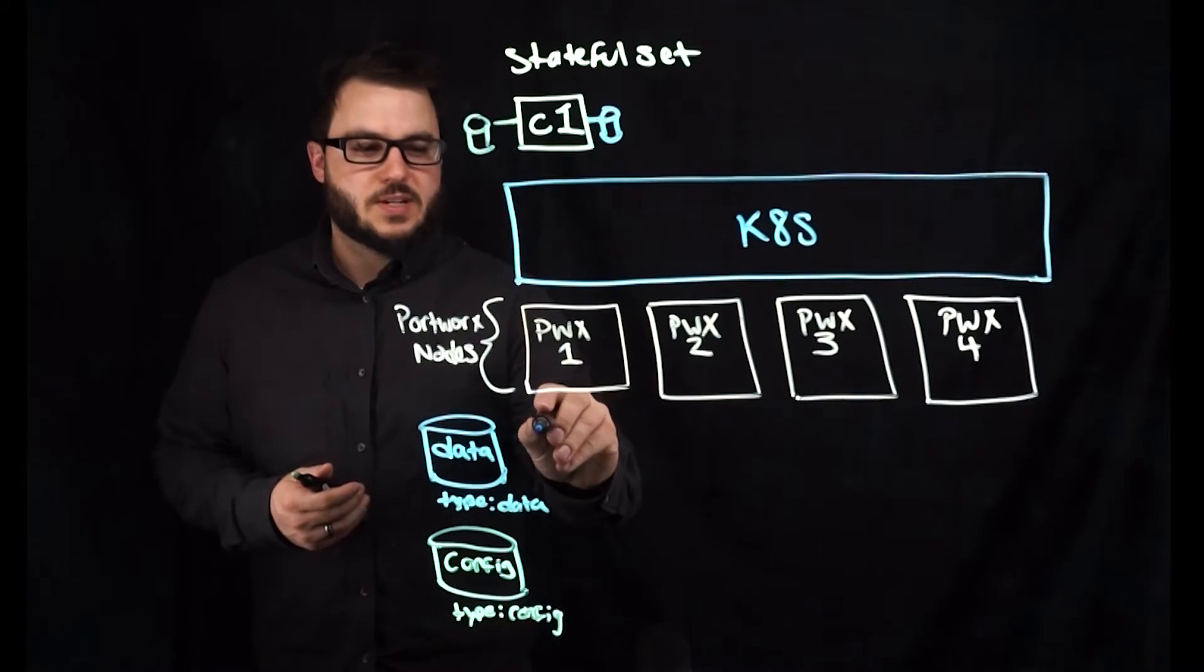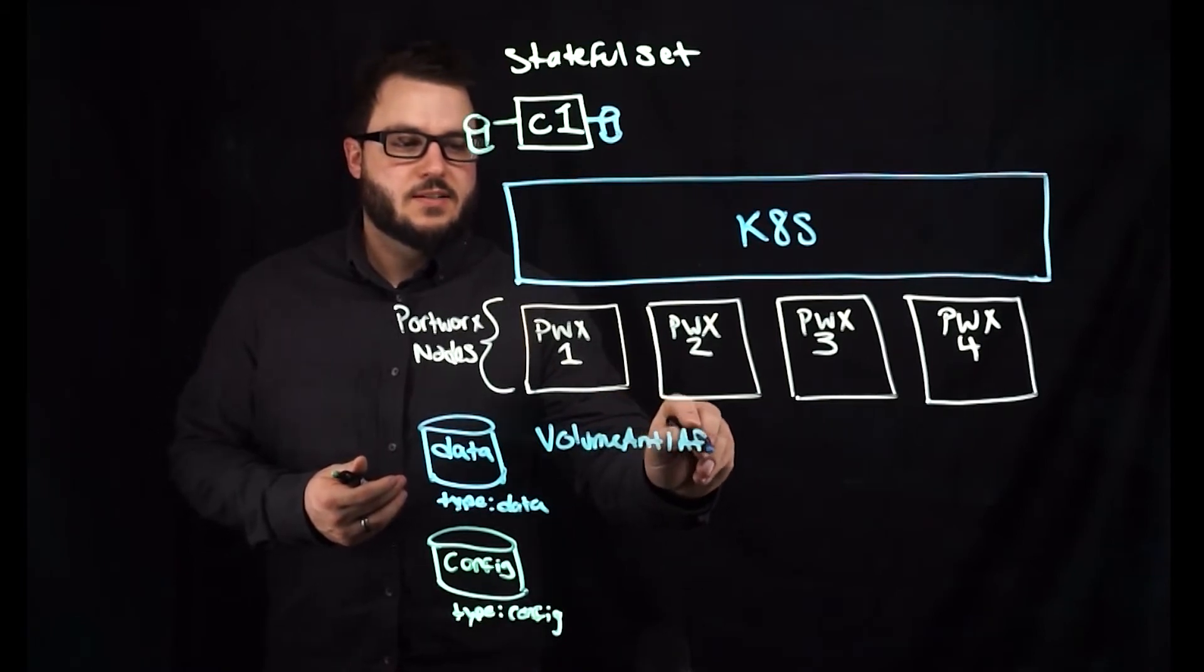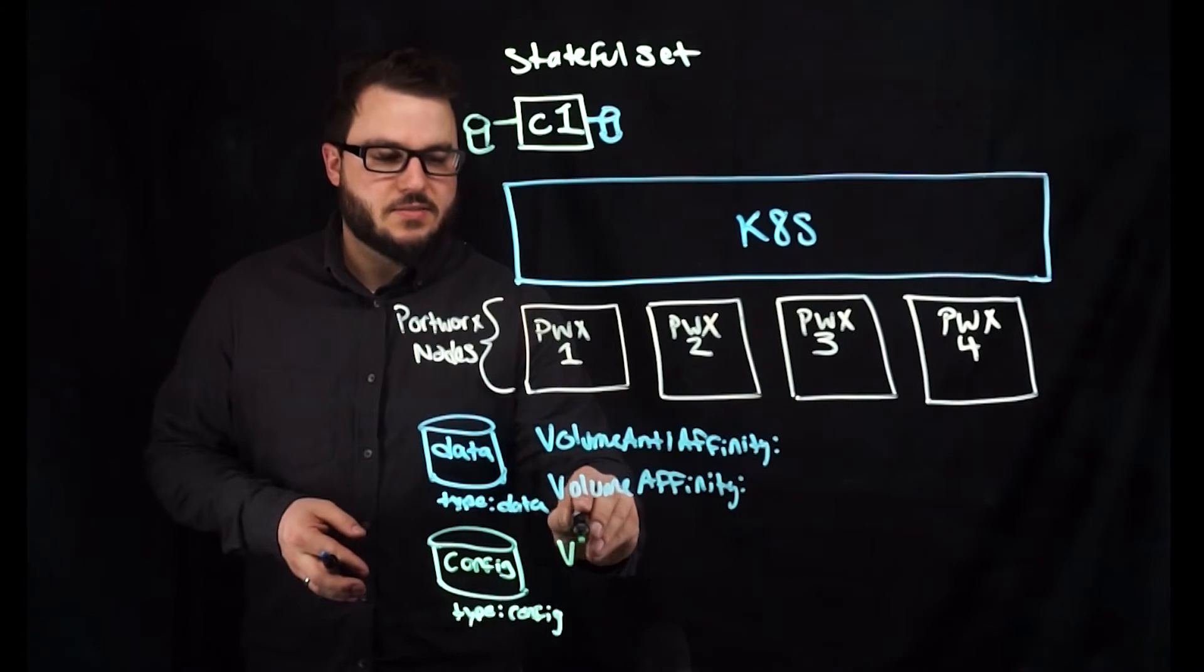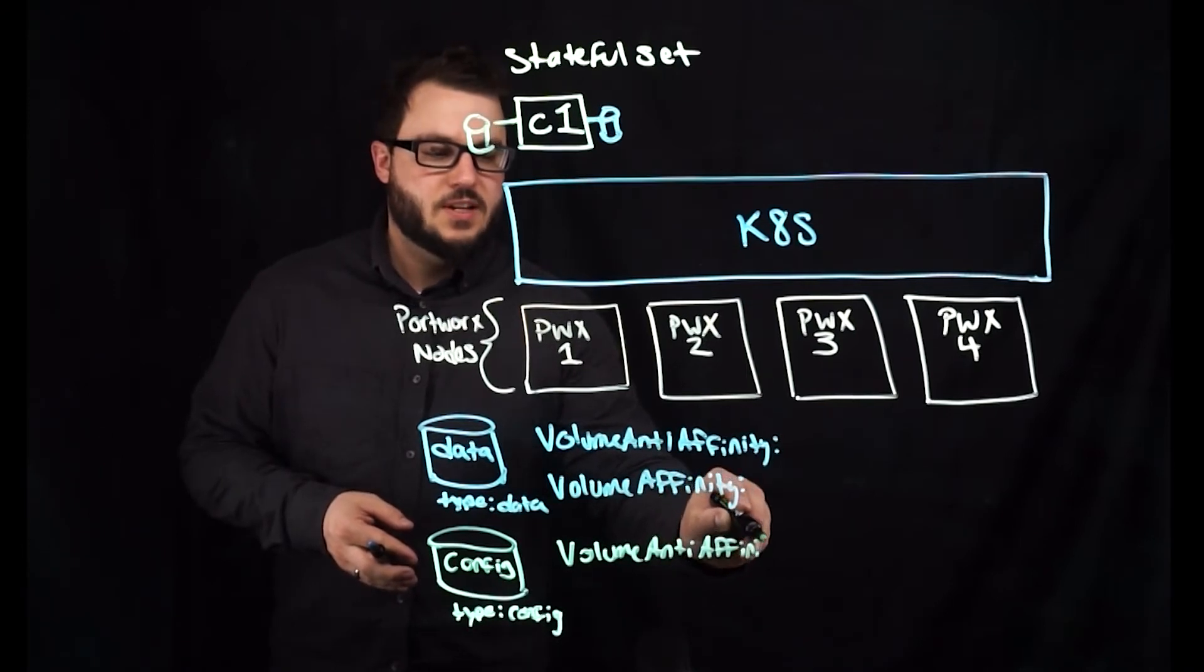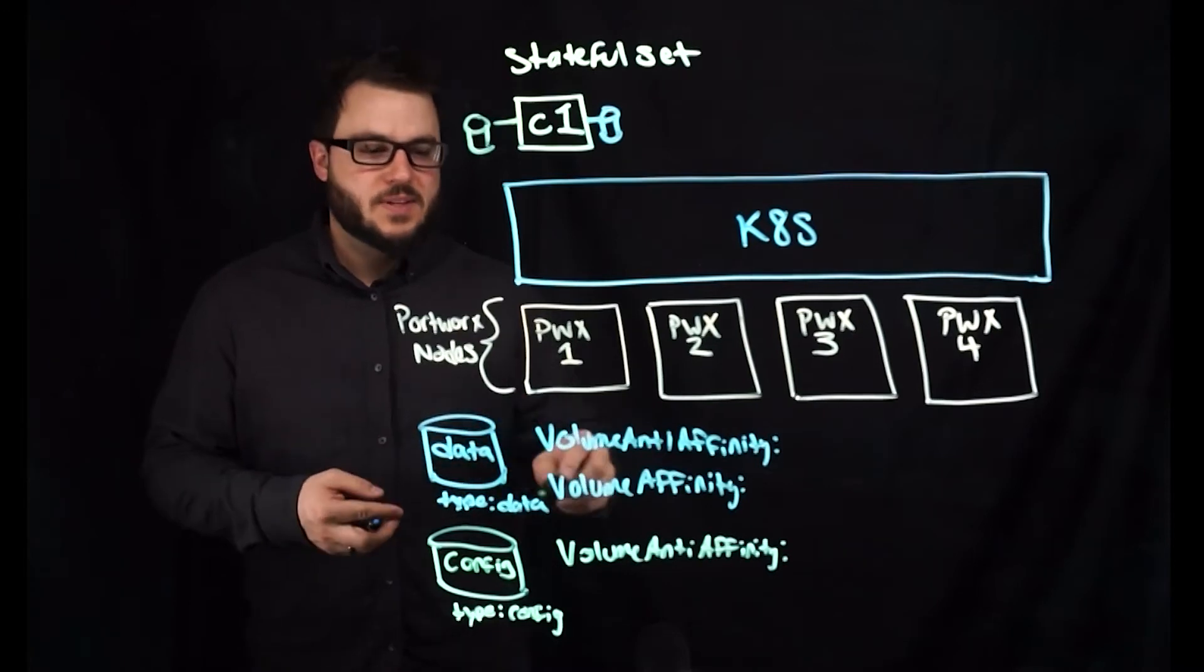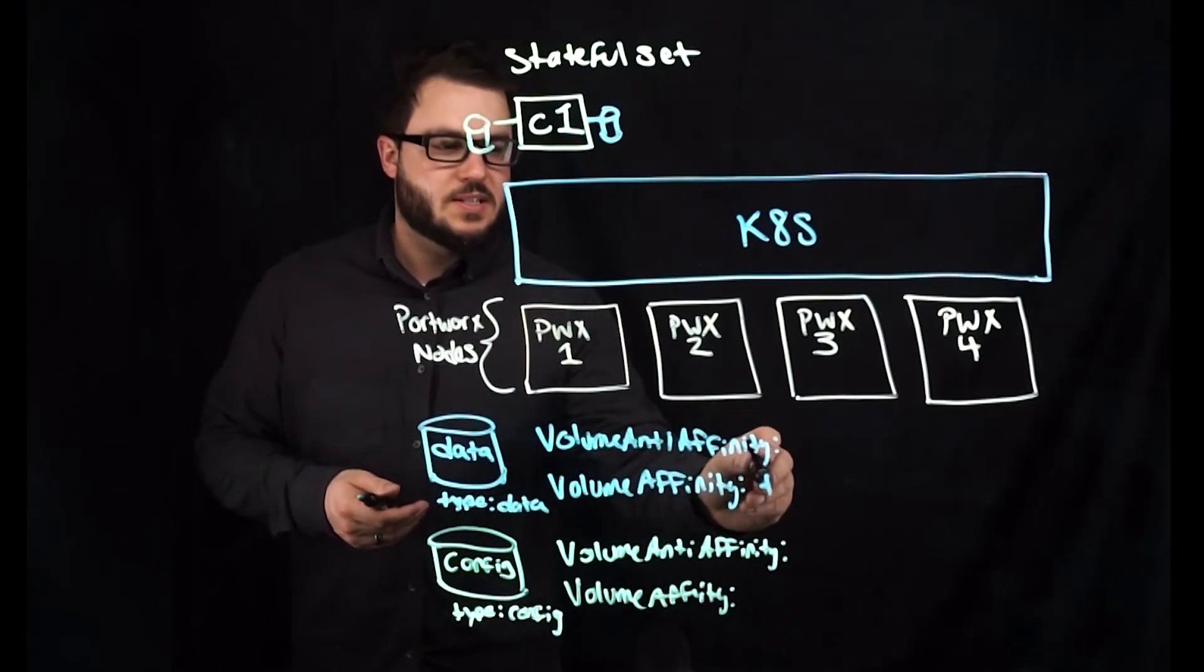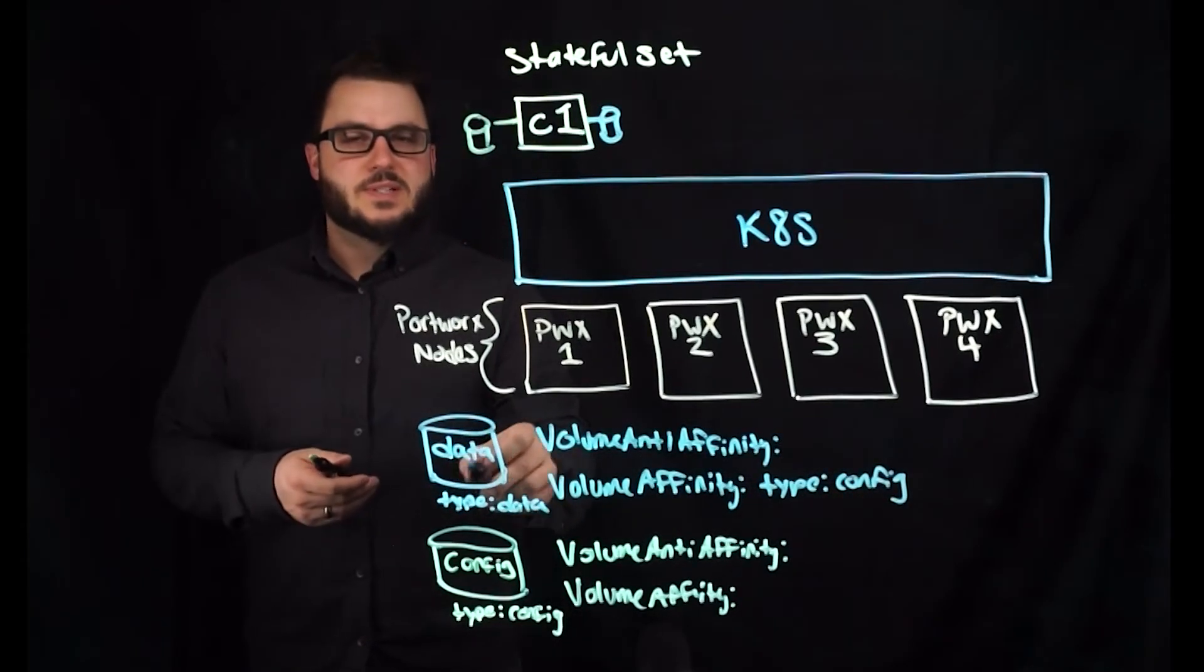Now we're going to be talking about two things for each volume, which is volume anti-affinity and volume affinity. So what volume anti-affinity does is kind of what it tells in the name itself. Being anti to affinity basically does the opposite of the rule for affinity. And an example of that would be if I wanted my affinity rule to be I want my data volume to always land next to type equals config.